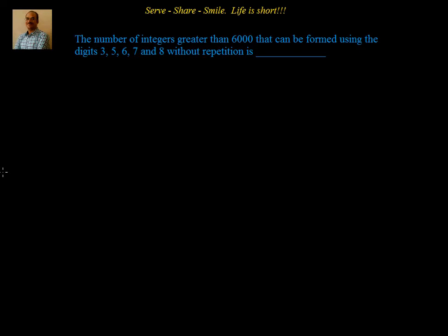Hello friends, welcome back. Let us look at this interesting problem related to permutations. We need to find the number of integers greater than 6000 that can be formed using the digits 3, 5, 6, 7, and 8 without repetition. The digits given to us are 3, 5, 6, 7, and 8.